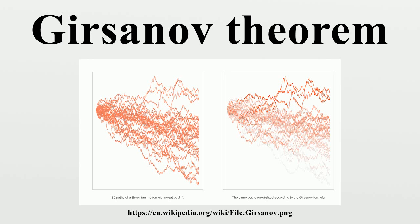The fact that the process is continuous is trivial. By Girsanov's theorem it is a Q local martingale, and by computing the quadratic variation it follows by Lévy's characterization of Brownian motion that this is a Q Brownian motion.